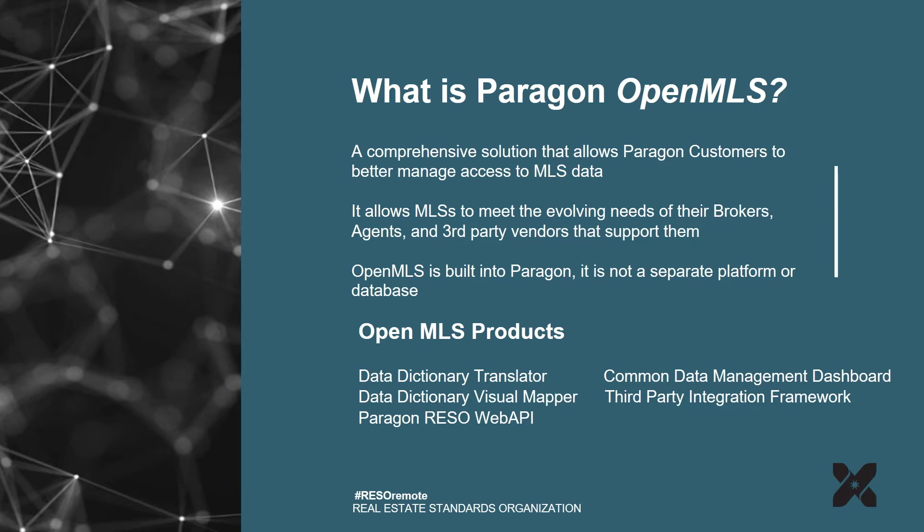The products that consist of OpenMLS are the Data Dictionary Translator, the Data Dictionary Visual Mapper, the Paragon RESO Web API that ties those two together, as well as the Comma Data Management Dashboard and the third-party integration framework.